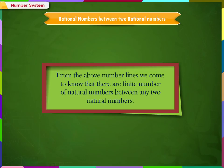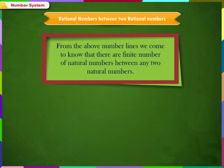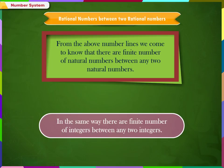From these number lines, we come to know that there are a finite number of natural numbers between any two natural numbers. In the same way, there are a finite number of integers between any two integers.